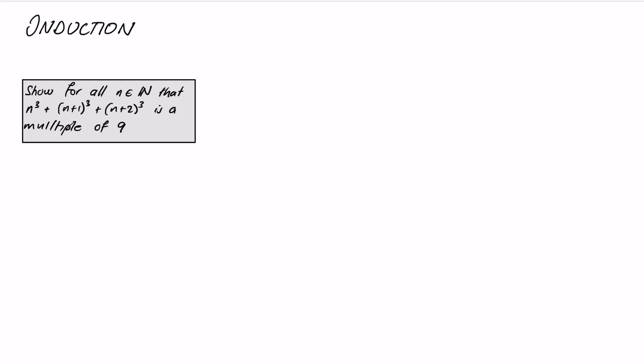So how does that work in terms of mathematics? The kind of question we might want to prove by induction is something like the following: for all natural numbers, n³ + (n+1)³ + (n+2)³ is a multiple of 9. Let's set that up as a statement about n. We'll define our statement S(n) to be: n³ + (n+1)³ + (n+2)³ is a multiple of 9. At the moment we can't really tell by looking at it whether that's true or false.